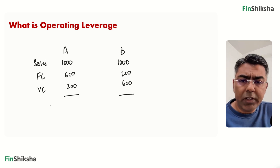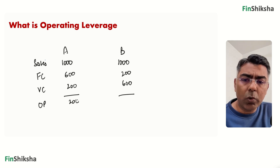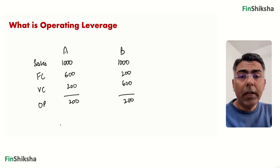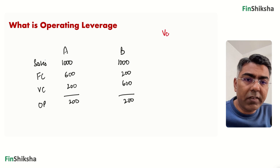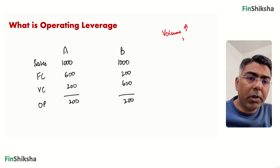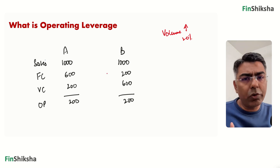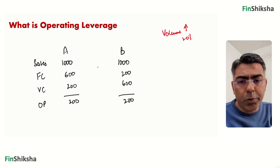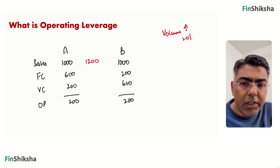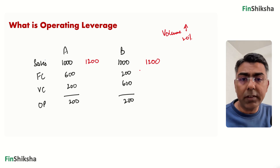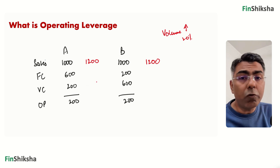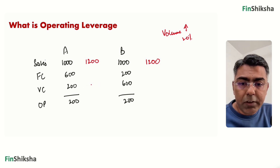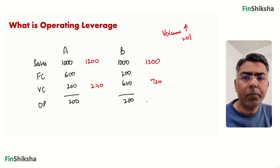Based on that, we get an operating profit number for both companies — operating profit is 200 for both. Now assume sales changes by 20%, i.e., volume goes up by 20%. They were selling 1,000 units at 1 rupee each, so now they're selling 1,200 units and sales becomes 1,200 in both cases. Variable cost will also move up by 20% — going to 240 in the first case and 720 in the second.